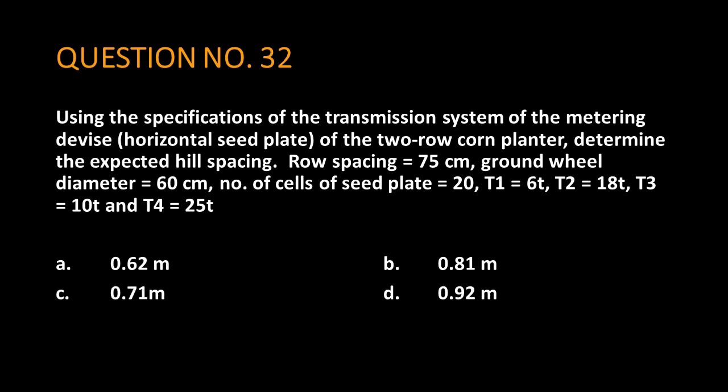Again, using the specifications of the transmission system of the metering device, horizontal seed plate, of the two-row corn planter, determine the expected hill spacing.